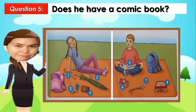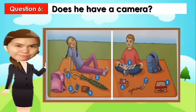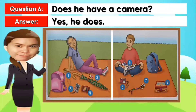Question number five: Does she have a comic book? The answer is yes, she does. Next, does he have a camera? The answer is yes, she does.